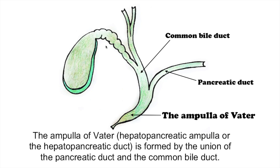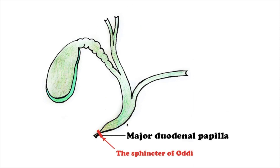The common bile duct descends behind the superior part of the duodenum, pierces the medial wall of the descending part of the duodenum, and drains together with the duct of the pancreas into a dilatation inside the greater duodenal papilla called the ampulla of the bile duct. The circular layer of muscles in the wall of the bile duct where it opens into the duodenum forms the sphincter of Oddi, which regulates the flow of bile into the duodenum.